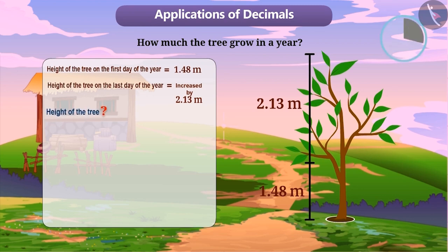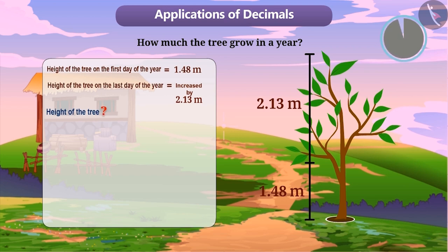Pause the video and try to solve it. If Mohit wants to find the height of the tree, then he has to add the height of the tree on the first day of the year to the increase in the height.